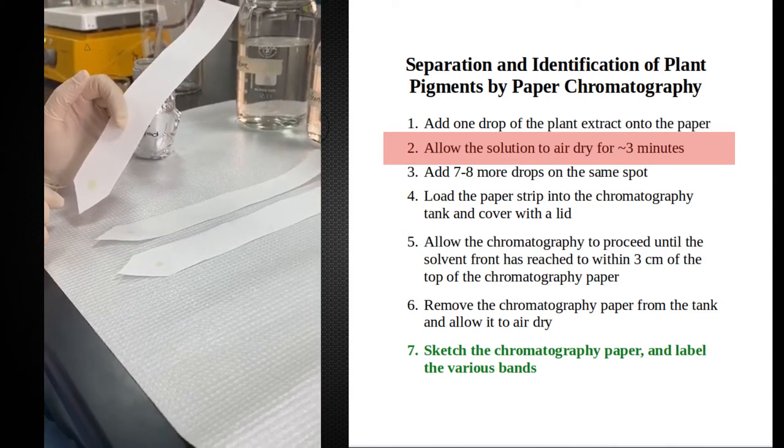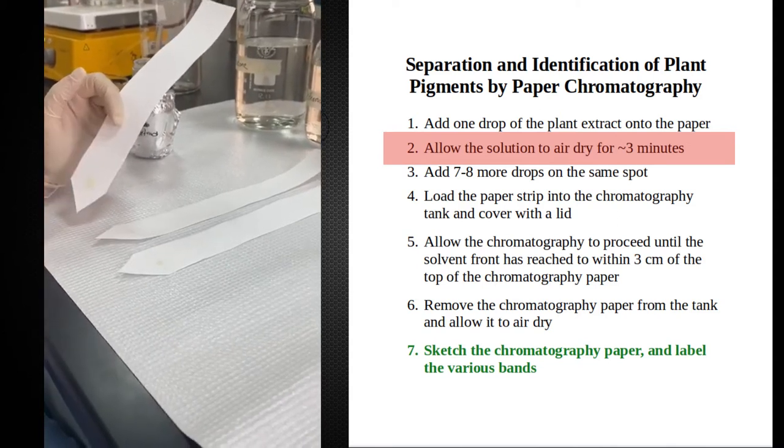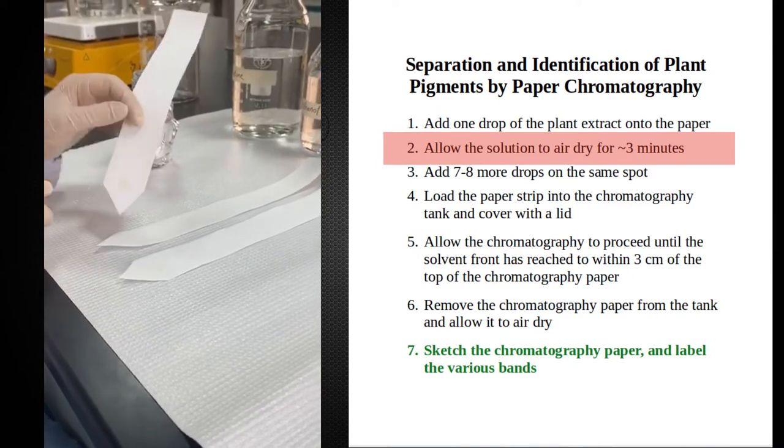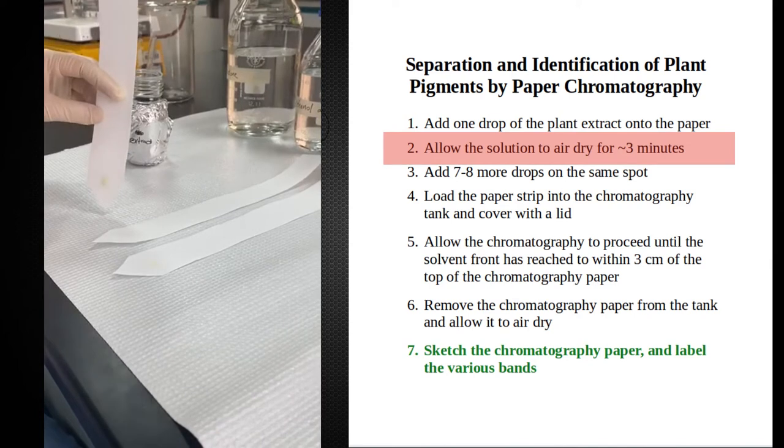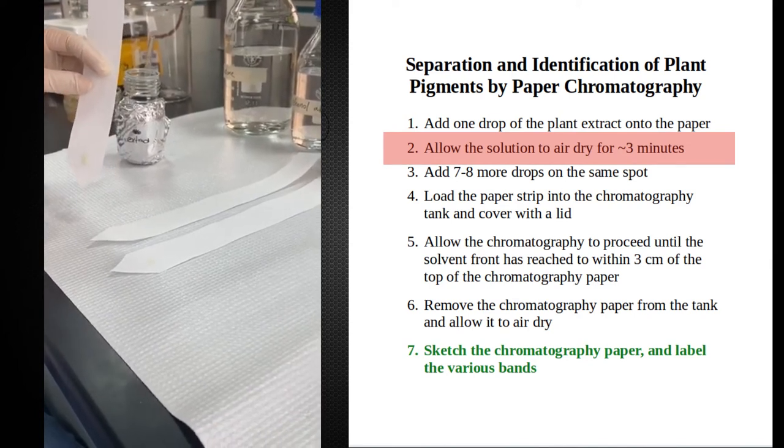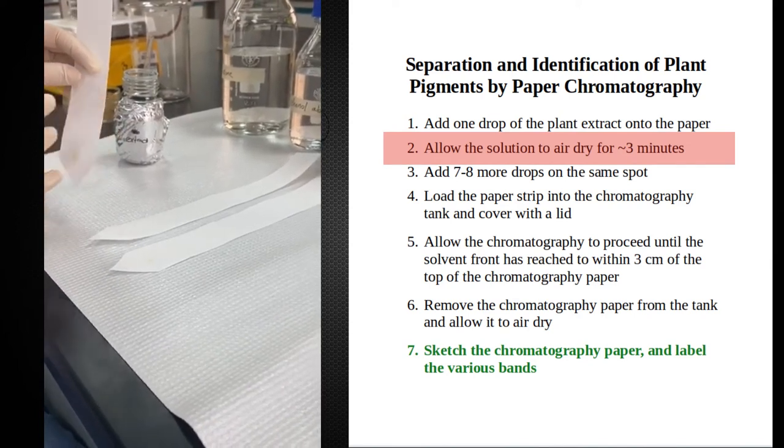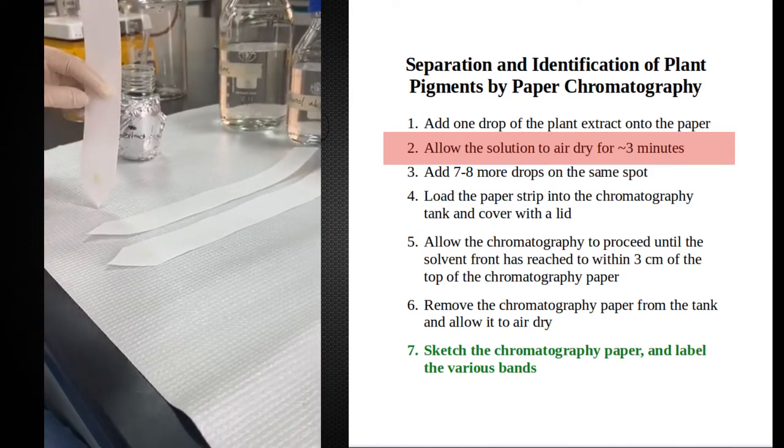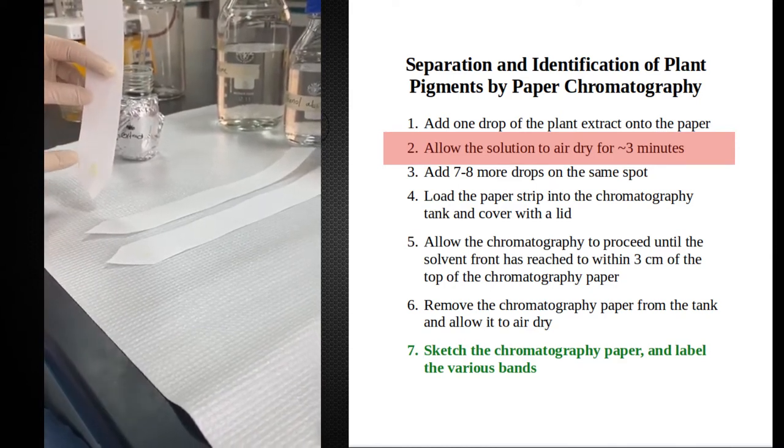This is cellulose filter paper. This paper is polar. When I'm done depositing these dots of chlorophyll, I'm going to dip this paper into a non-polar solvent. The paper is polar, the solvent is non-polar. The solvent is going to be sucked up in the paper.